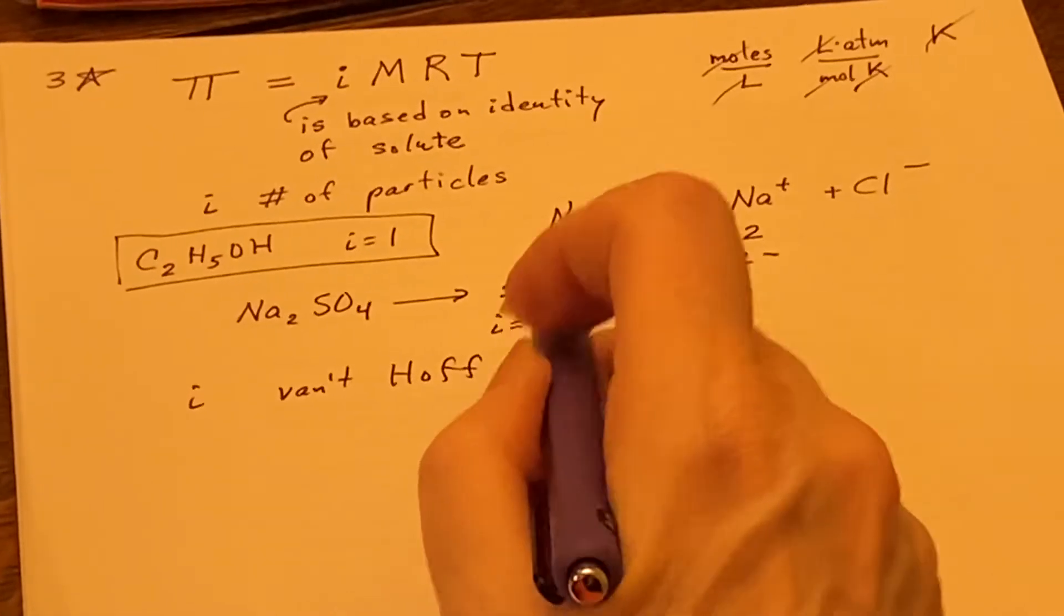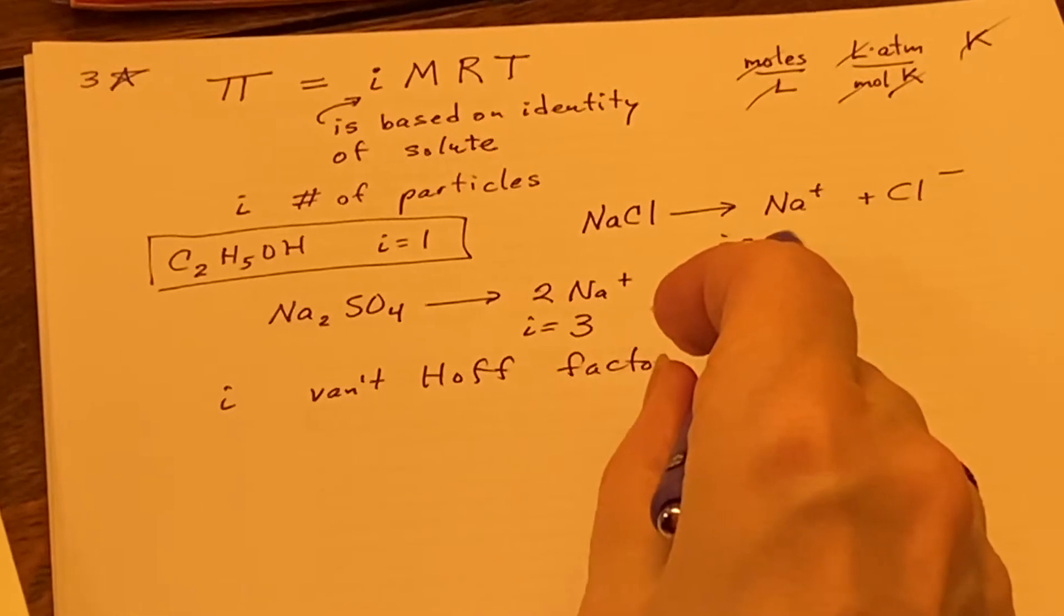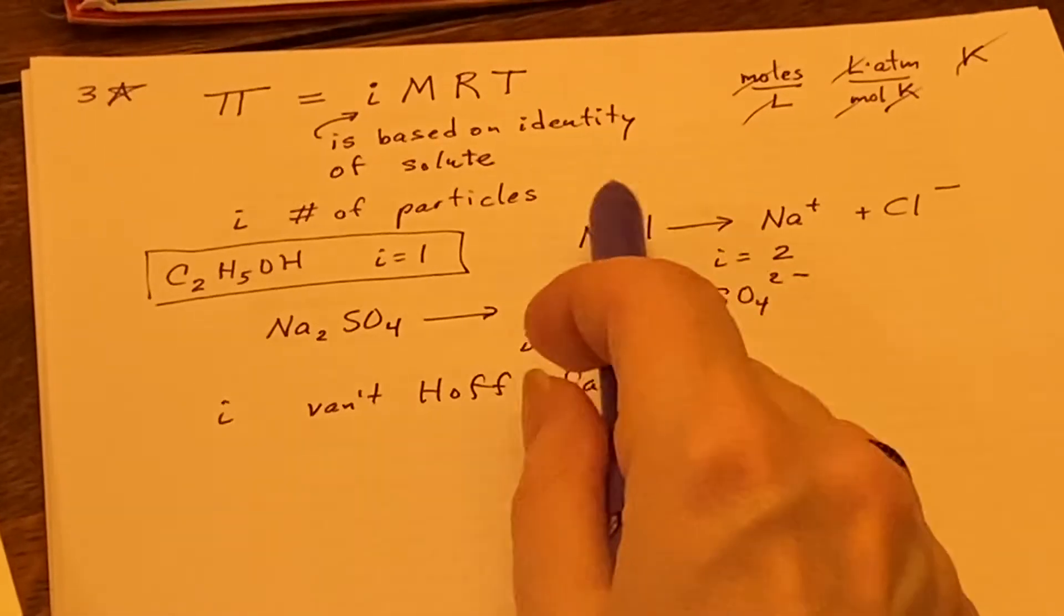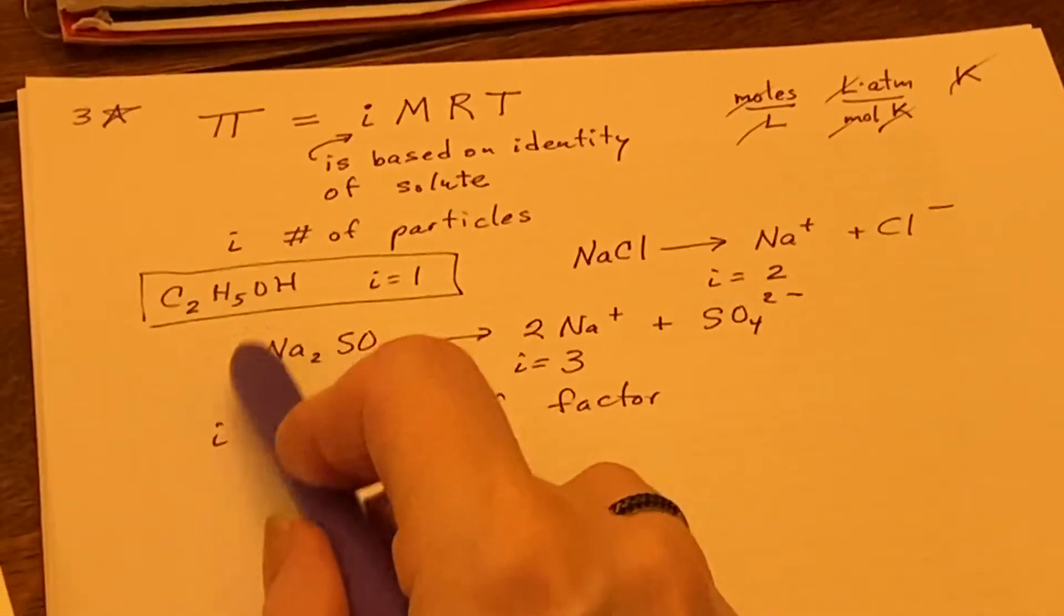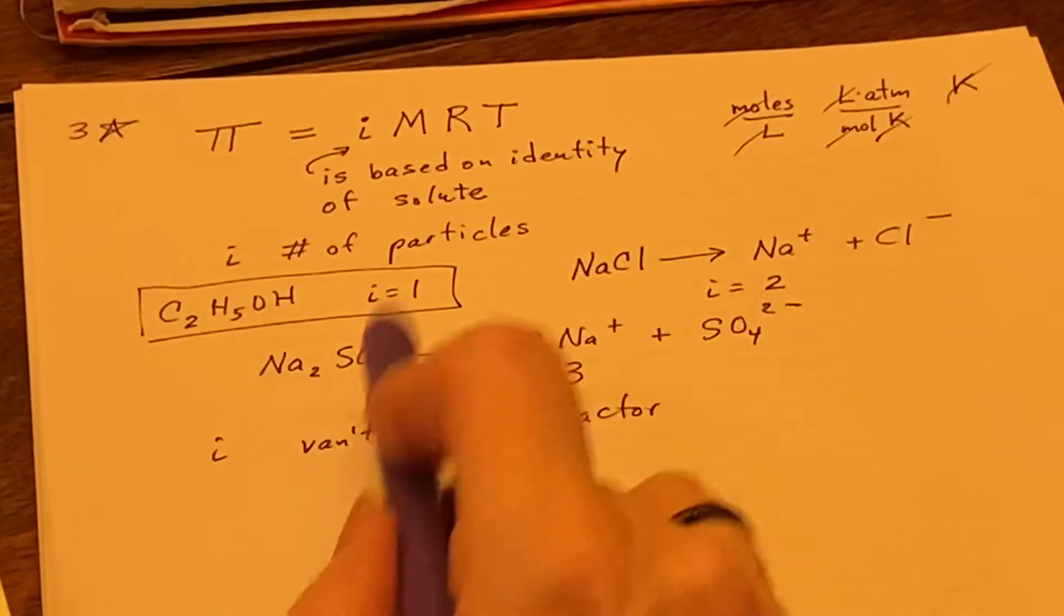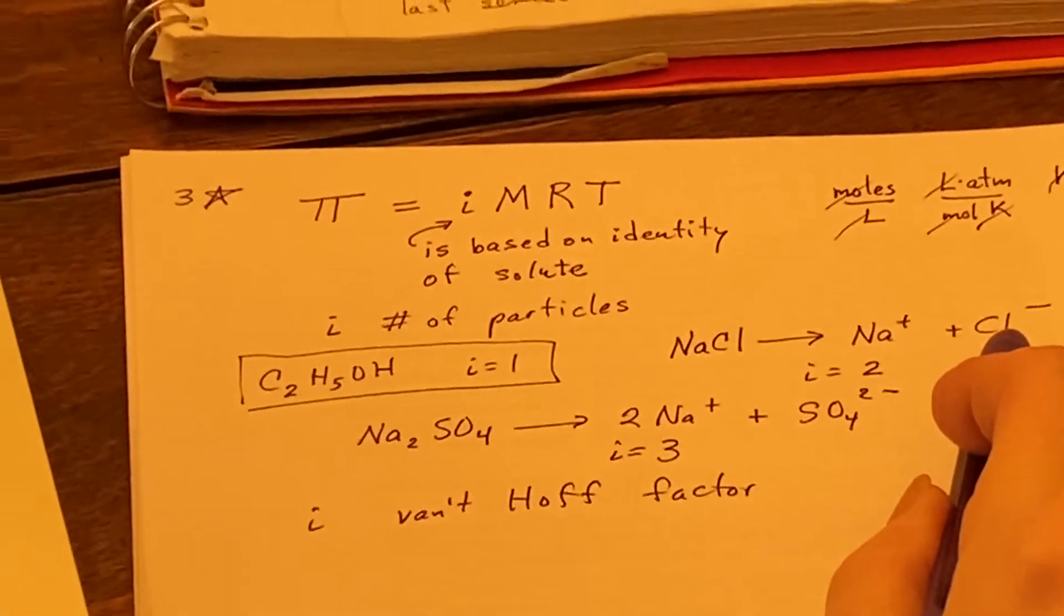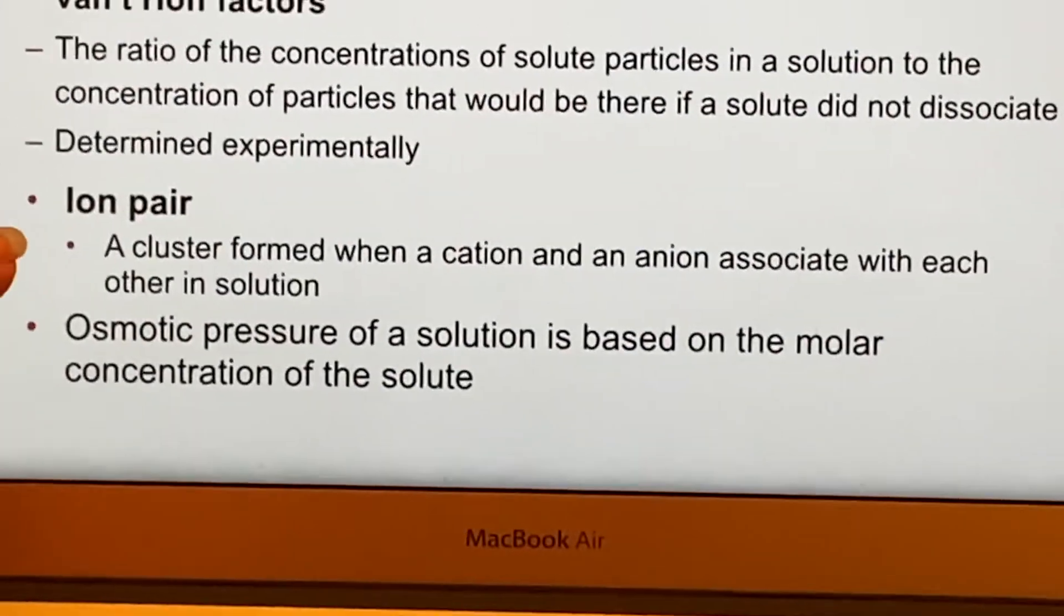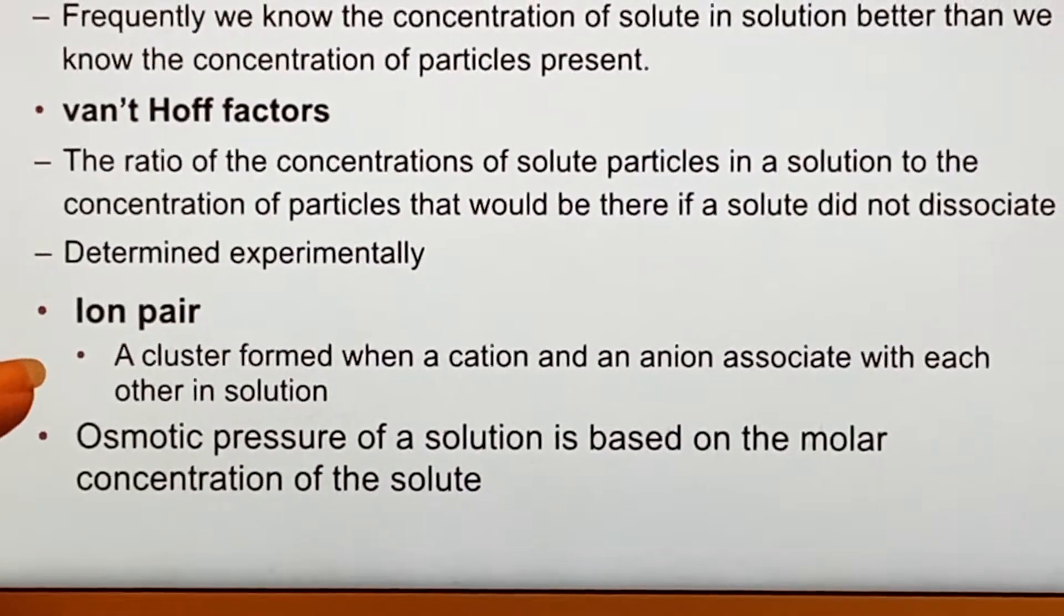But that isn't entirely true. This is the maximum i, is two particles for every one formula unit, and three particles for every one formula unit here. The fact of the matter is, as soon as you start forming ions, they are attracted to each other. So sometimes, they won't completely separate, and you will have what's called an ion pair.